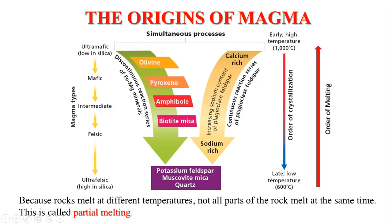So now we've got three different variables. By increasing the temperature, you can originate magma. By decreasing the pressure, you can originate magma. And by adding volatiles, you can generate magma.